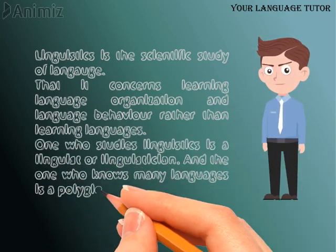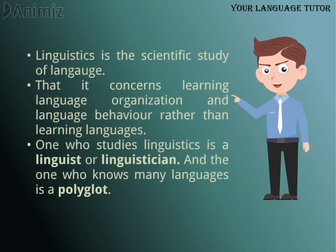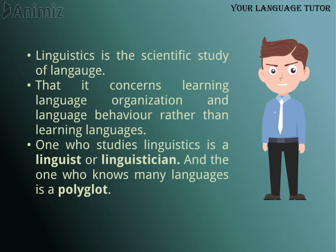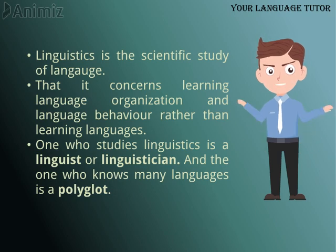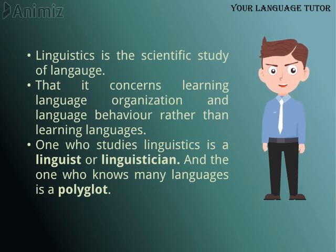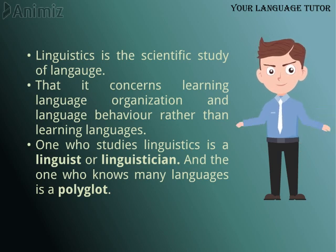A linguist or linguistician is one who studies language scientifically, while a polyglot is someone who knows many languages. Language ki scientific study ko Linguistics kehte hain, jaise ke Life ki scientific study ko Biology aur Matter ki scientific study ko Chemistry kehte hain. Lekin Chemistry aur Biology natural sciences mein hain, jabke Linguistics social sciences mein aati hai. Linguistics ka maqsad hota hai Language Organization, Language Behavior aur Language ki Structures ko study karna — na ki language ko hi padhna. Ek linguist ke liye zaroori nahi ke usay zyada se zyada zabanein aani chahiye; usay bas yeh jaanna chahiye ke zaban kaise sikhi jaati hai, uski structures kya hoti hain, uska behavior kya hota hai, uski history kya hoti hai. Jo shakhs bahut languages jaanta hai, usay hum Polyglot kehte hain.